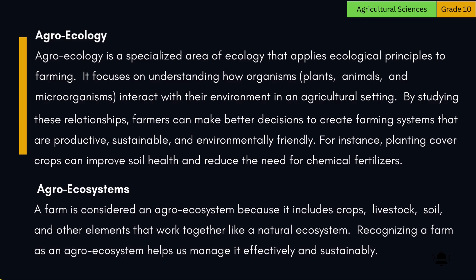A farm is considered an agroecosystem because it includes crops, livestock, soil, and other elements that work together like a natural ecosystem. Recognizing a farm as an agroecosystem helps us manage it effectively and sustainably.